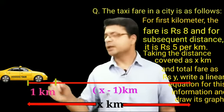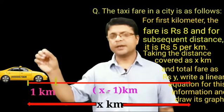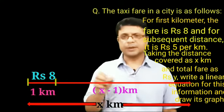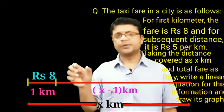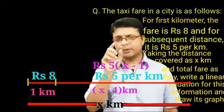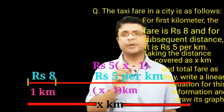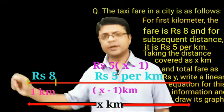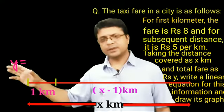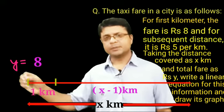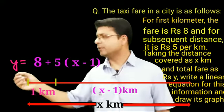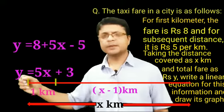For the remaining (x − 1) km at ₹5 per km, the fare is 5(x − 1). So total fare y = 8 + 5(x − 1). Simplifying: y = 8 + 5x − 5, which gives y = 5x + 3. This is our linear equation in two variables.